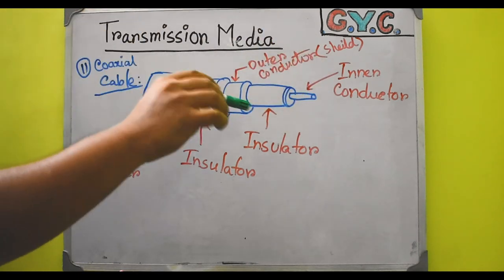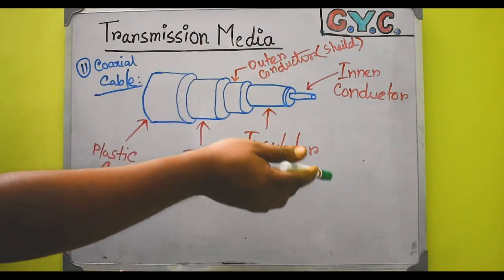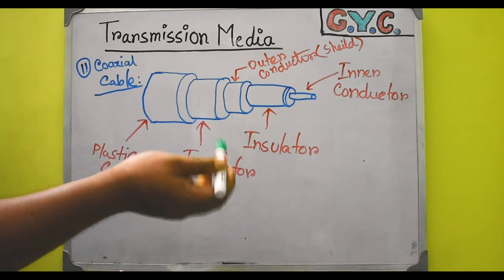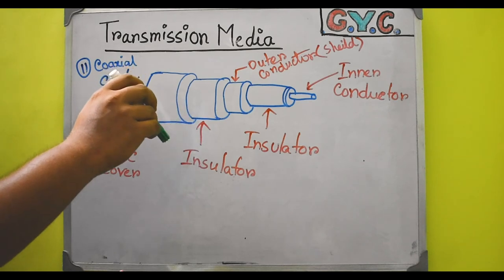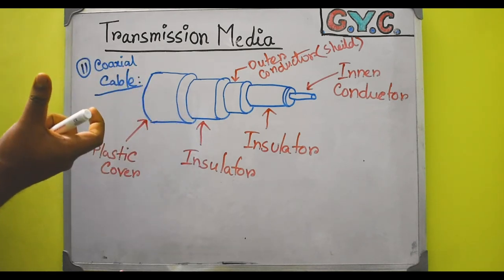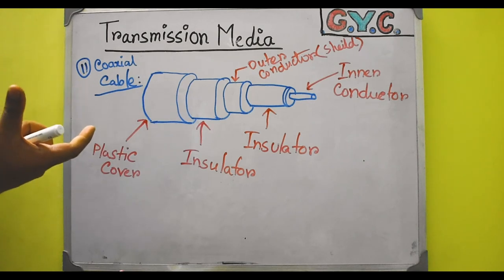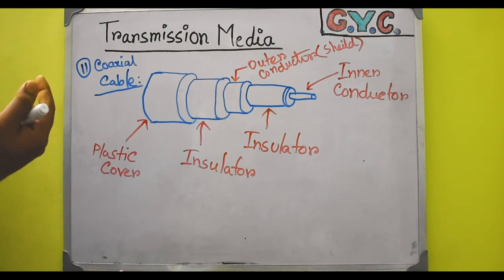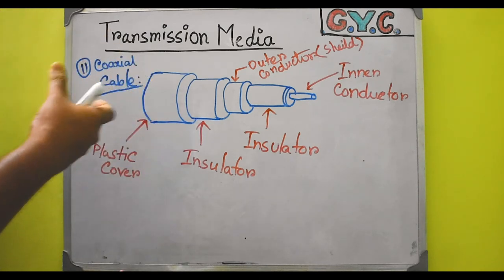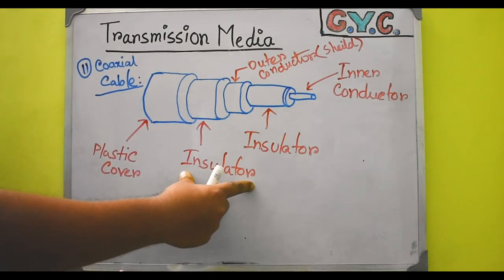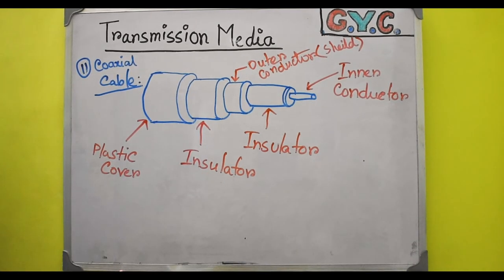So in coaxial cable, the inner conductor actually carries the signal generated from the sender's message. That inner conductor is insulated by some insulator, and then there is the outer conductor which basically works as the shield — working as the ground. That outer conductor is also covered with an insulator and the plastic cover.